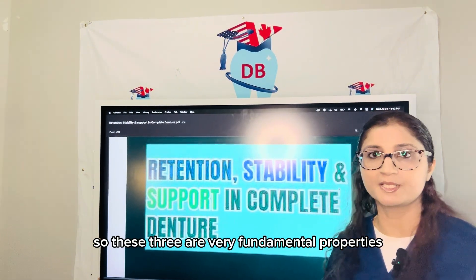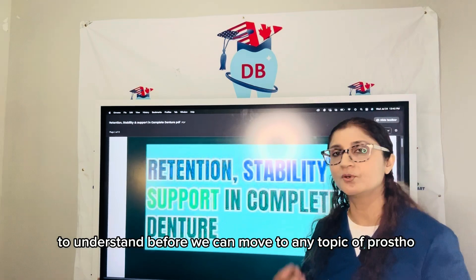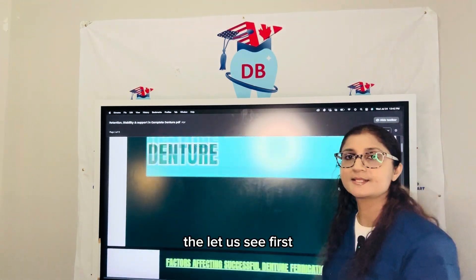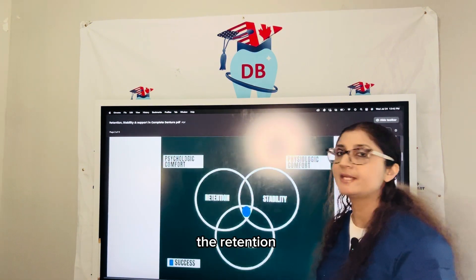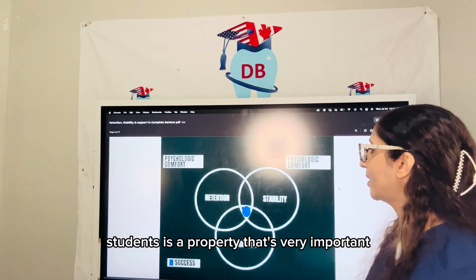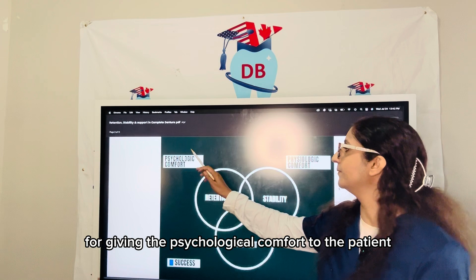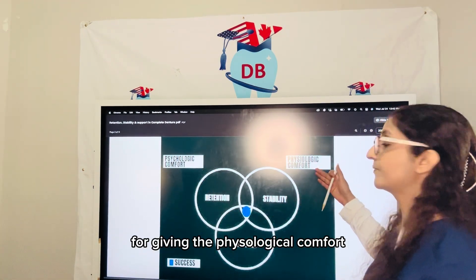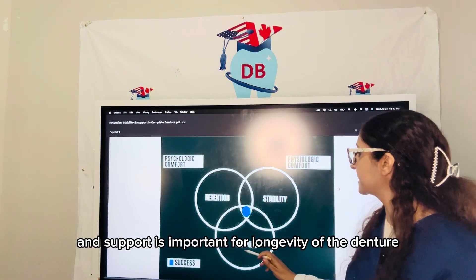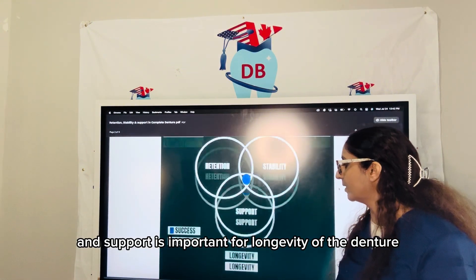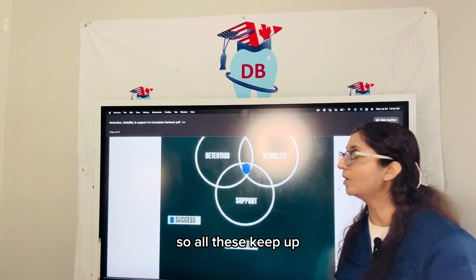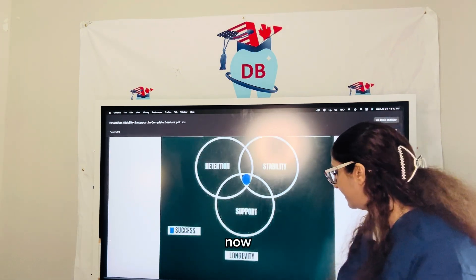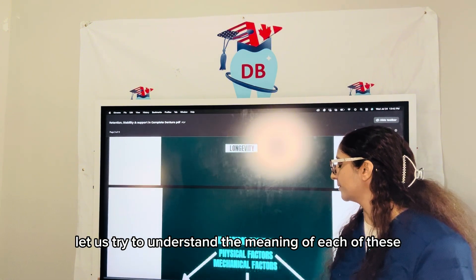These three are very fundamental properties to understand before we can move to any topic of prosthodontics. Retention is a property that's very important for giving the psychological comfort to the patient. Stability gives the physiological comfort, and support is important for the longevity of the denture. All these three properties together will give success to your denture.